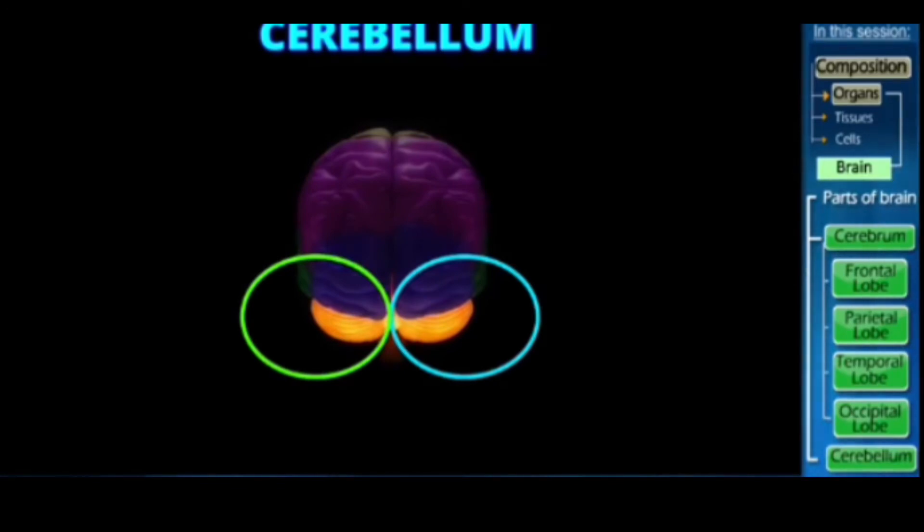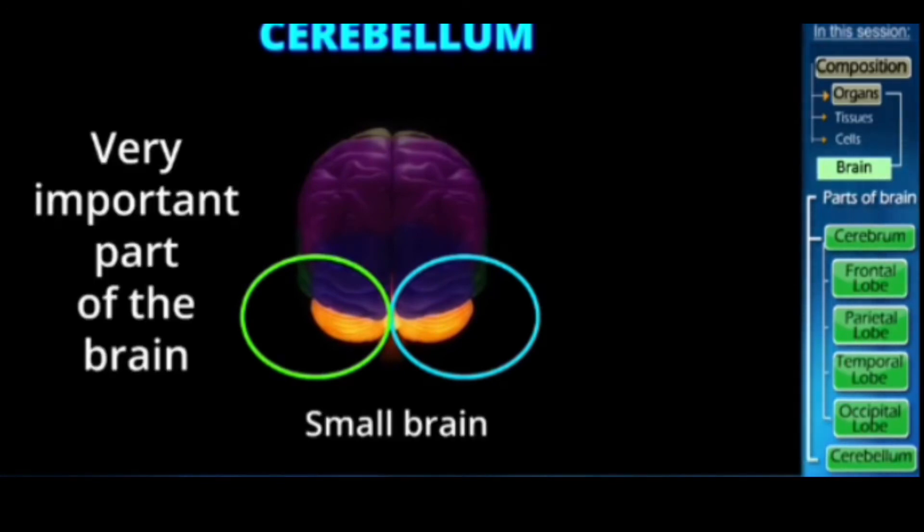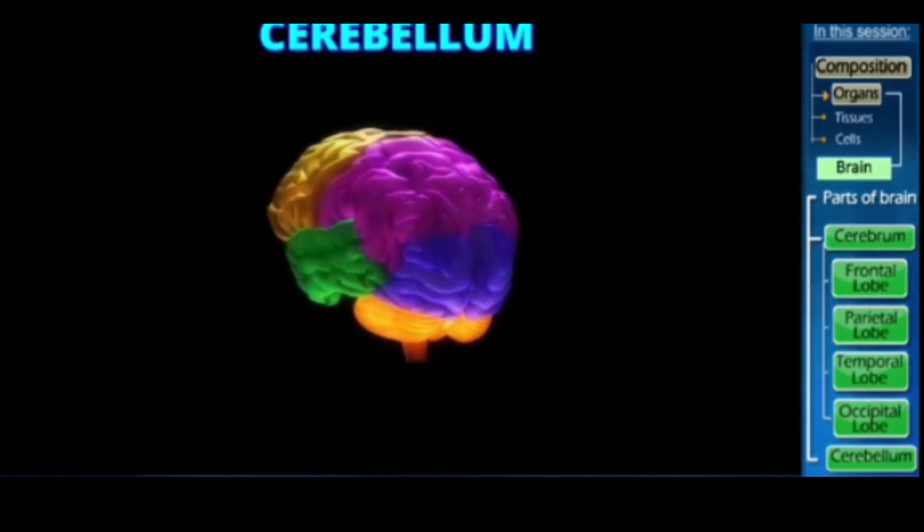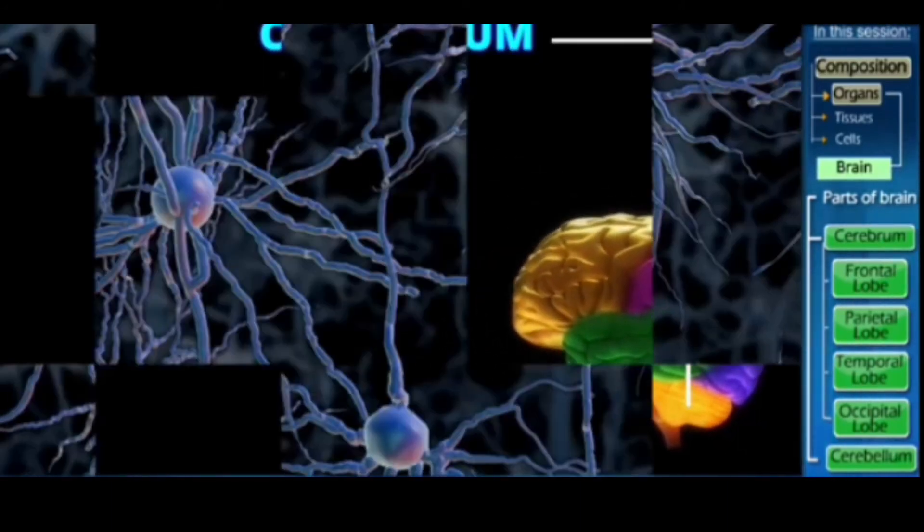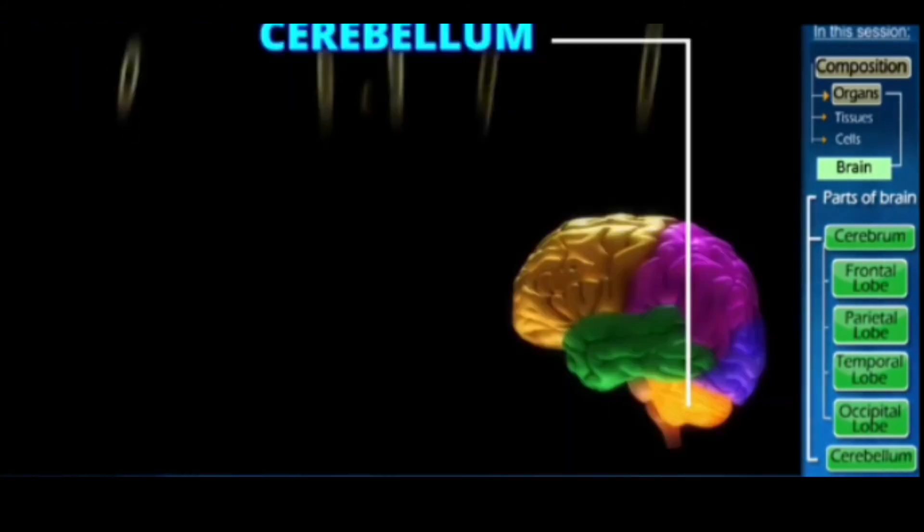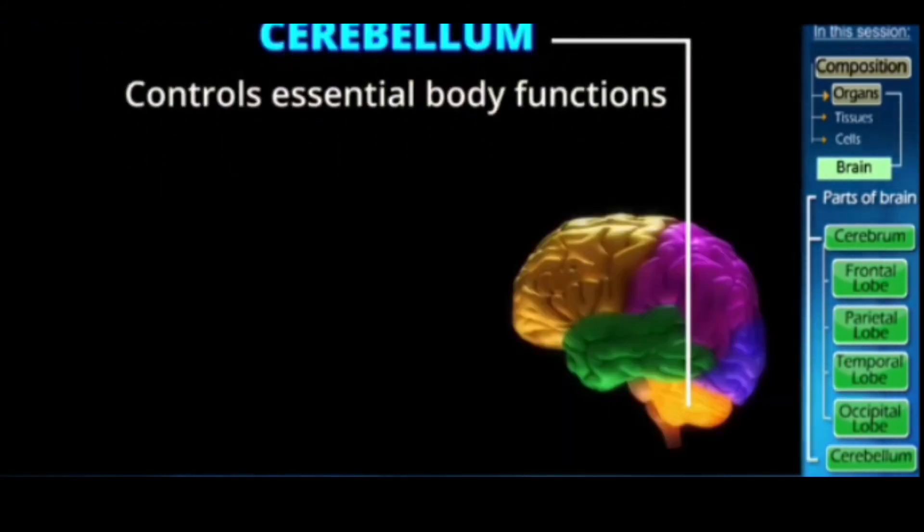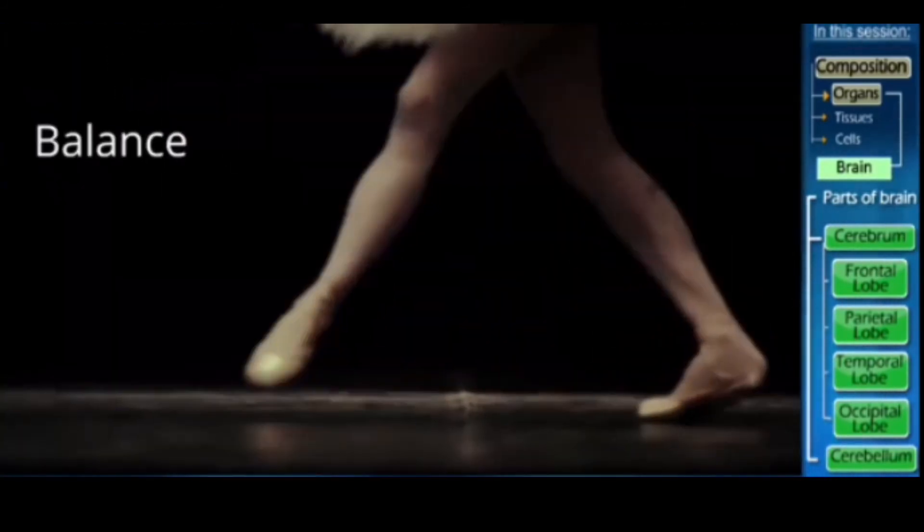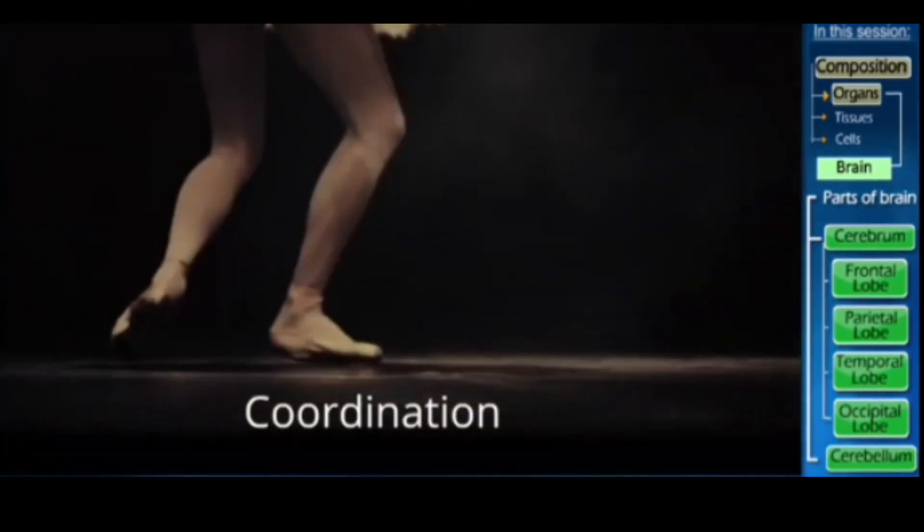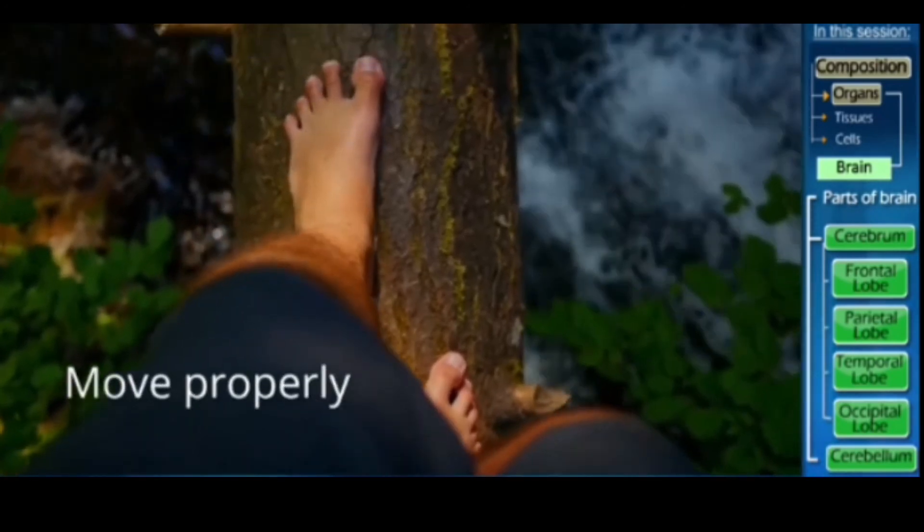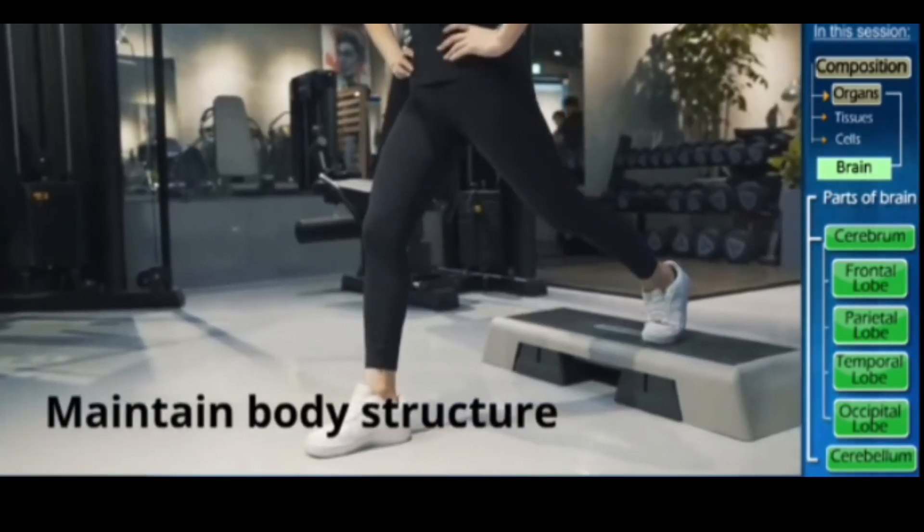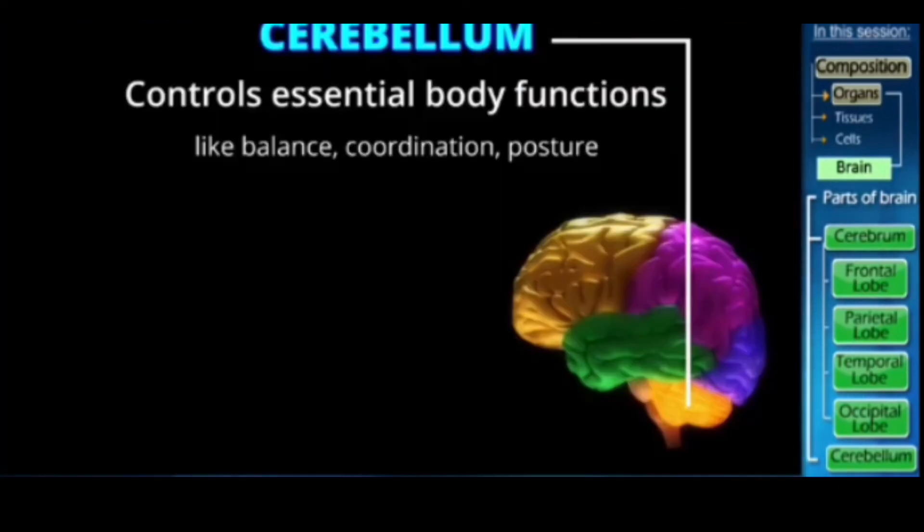It is a very important part of the brain. Compared to the cerebrum, the cerebellum has more number of neurons and it controls essential body functions like balance, coordination and posture, allowing us to move properly and to maintain our structure. So your cerebellum is the reason that you can stand on one leg, jump around, run and maintain your body posture and structure.